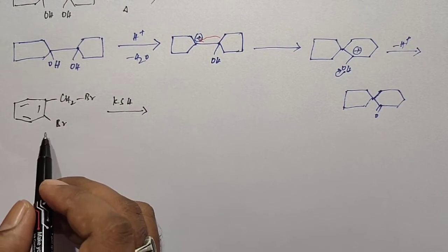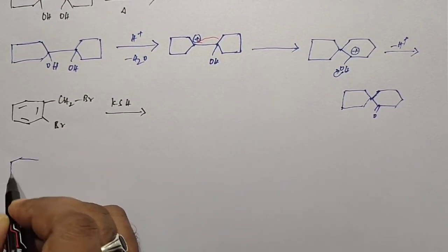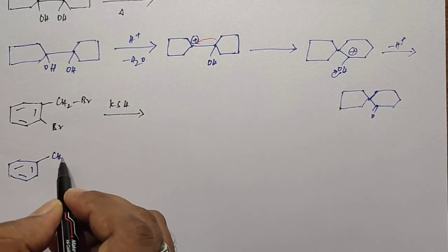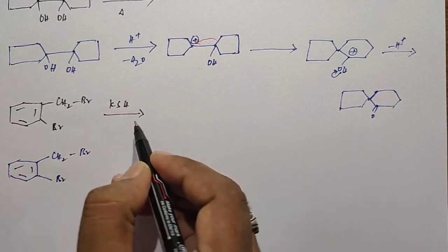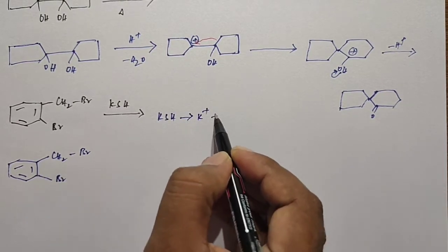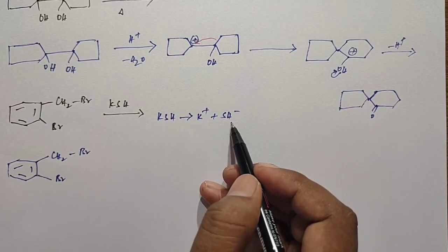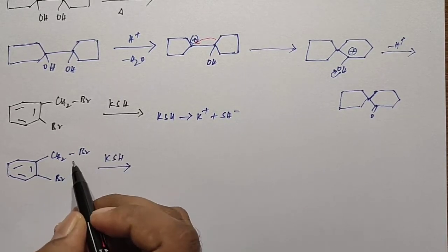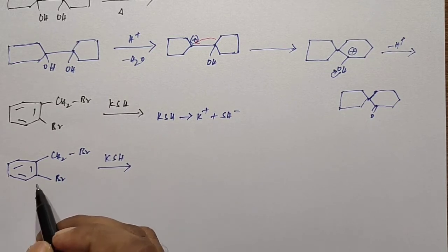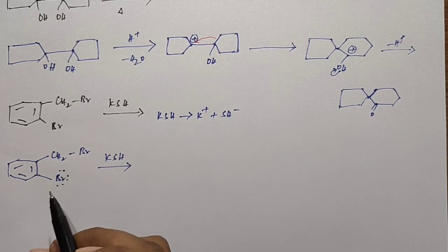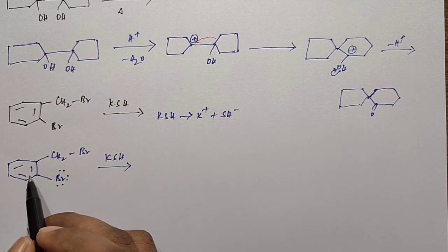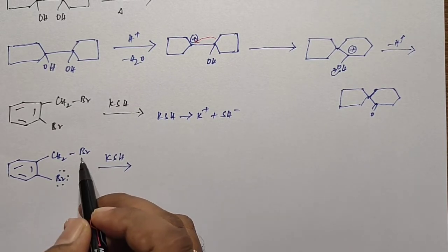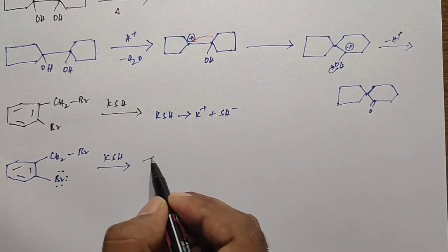The next incomplete reaction: the compound reacts with KSH. One of the bromine atoms is replaced by the thio alcohol group (SH⁻). KSH dissociates into K⁺ and SH⁻. We have two bromine atoms, but the bromine on the benzene ring is stabilized by resonance — one of its lone pair electrons participates in resonance with the benzene ring, making it more stable. So the SH group replaces the first bromine.